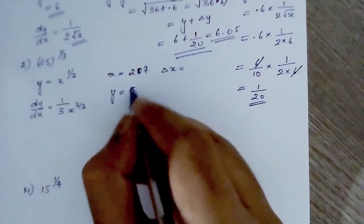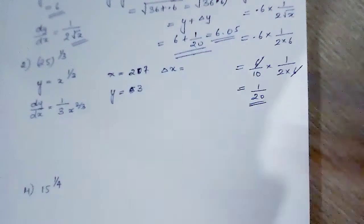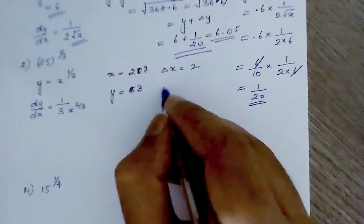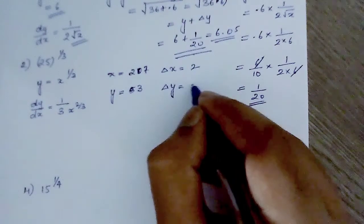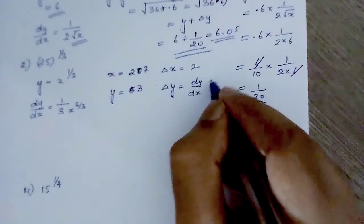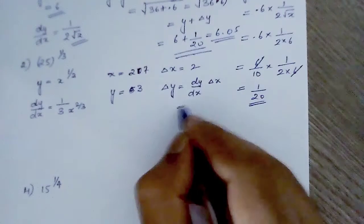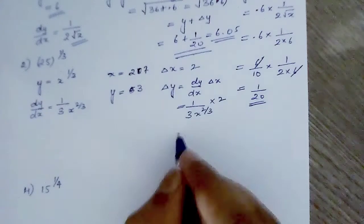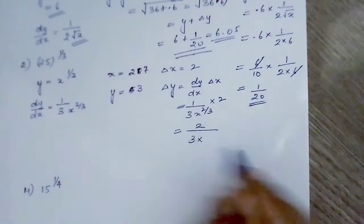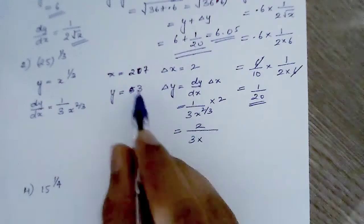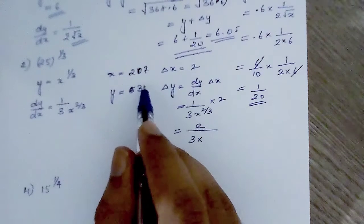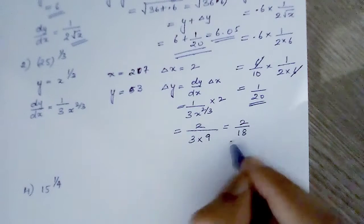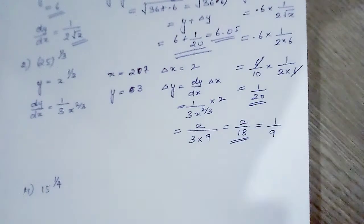Here y is equal to 3 and delta x is equal to 2. Delta y is equal to dy by dx times delta x, which is 1 by 3 x raised to 2 by 3 into 2. For x raised to 2 by 3, that means cube root of 27 which is 3, squared gives 9. So delta y is 2 by 9 divided by... which gives 1 by 9.